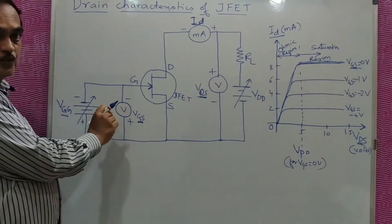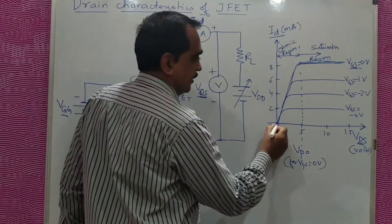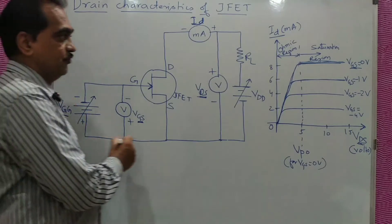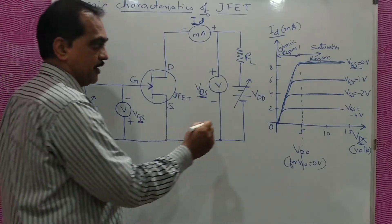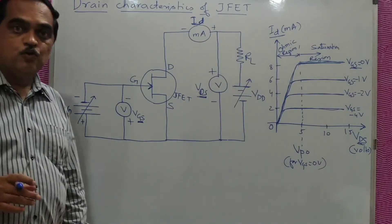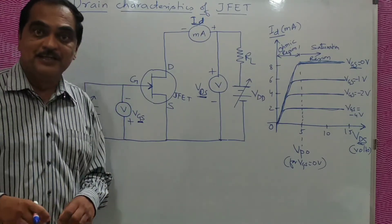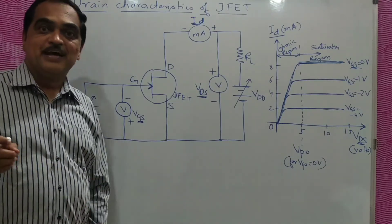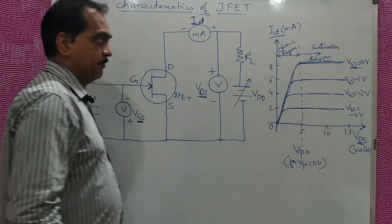Then you make VGS equal to minus 1 volt and repeat the same procedure — vary the voltage, note down VDS and ID — you get the curve when VGS equals minus 1 volt. Again increase VGS to minus 2 volt and repeat the procedure to get another curve. As you increase the VGS (reverse bias), the depletion layer widens, the channel narrows, electron flow decreases, and current decreases.